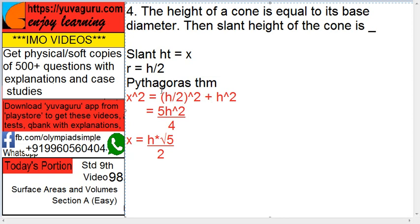Now this is x square, but we want x. So x equals the square root of this, which is h root 5 upon 2. That is the required answer.